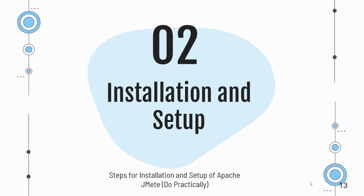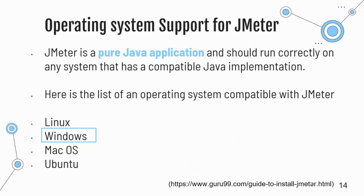JMeter is a pure Java application, which means it can run on any system with a compatible Java implementation. It is fully compatible with Linux distributions such as Ubuntu and Fedora. It is well suited for Windows operating systems including Windows 10, 8, and 7. Mac OS users can also easily install and use JMeter.